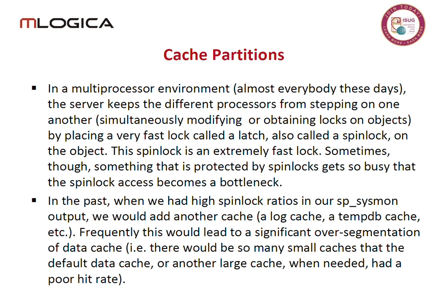The primary reason for creating multiple caches tends to be spin lock contention. A spin lock is a very fast, non-transactional lock used to avoid contention in multiprocessing environments. All processors want the same physical page — whoever gets the spin lock gets it. The spin lock controls a latch, and the latch is the entry into the cache, into the I/O buffer.